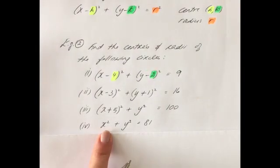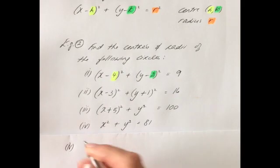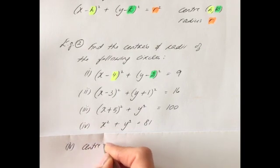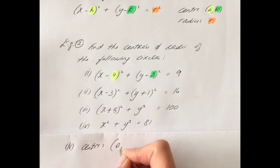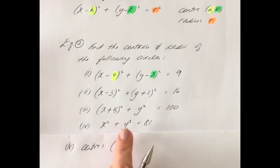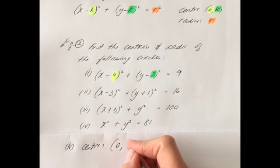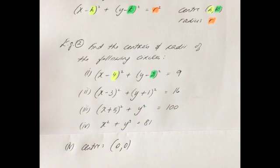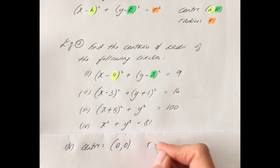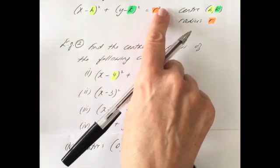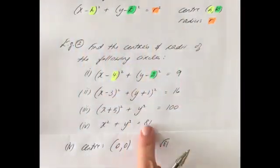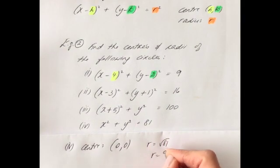For x² + y² = 81: nothing has been subtracted from x, so the x-coordinate of the center is 0. Nothing has been subtracted from y either, so the y-coordinate of the center is also 0. The radius is the square root of 81. Remember you always square-root the right-hand side because it has always been squared in the equation. So the radius is 9.